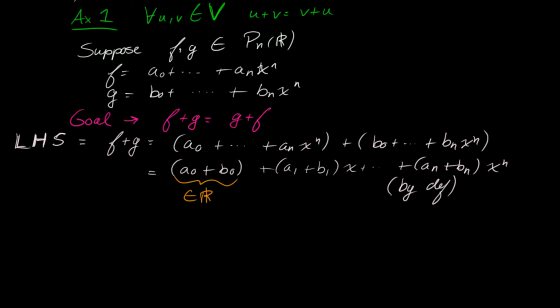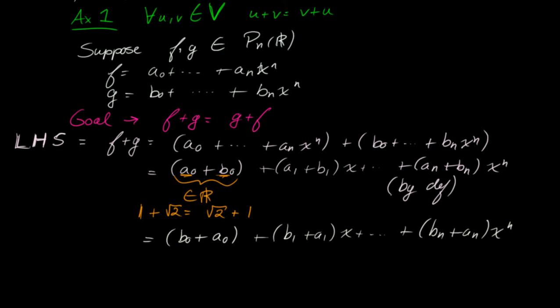And so now what we can do, we can say that because this guy belongs to R, we know that addition is commutative over R. That is, if I have 1 plus root 2, then I know that that's equal to root 2 plus 1. So we can use the same thing for two arbitrary numbers. So these are just arbitrary numbers in R. So we can just flip them. We can flip the addition and write b_0 plus a_0 plus (b_1 plus a_1)x and so on until (b_n plus a_n) x^n. So this is really similar to one of the proofs I did in R^n.